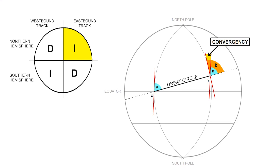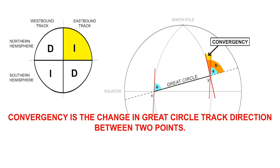This allows us to arrive at a second definition of convergency. In addition to being the angle of inclination between two selected meridians measured at a given latitude, convergency is also the change in great circle track direction between two points.